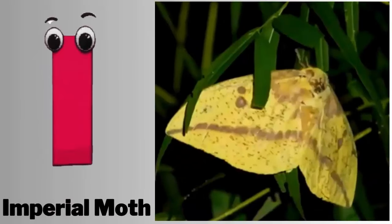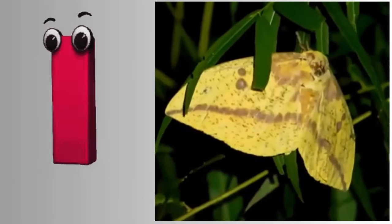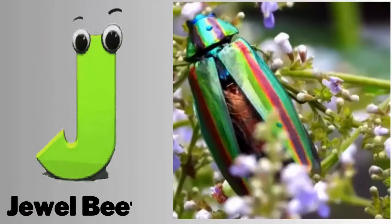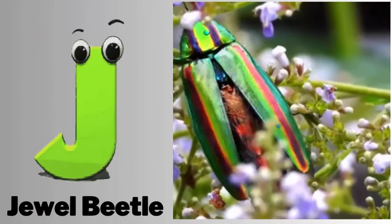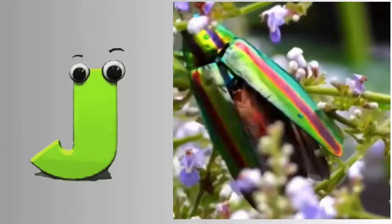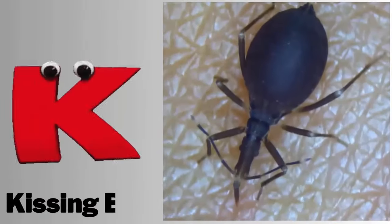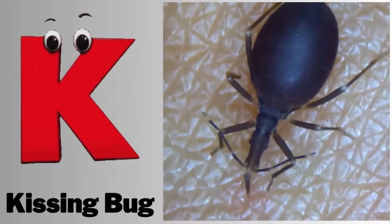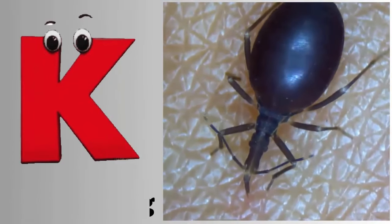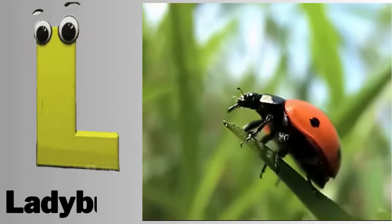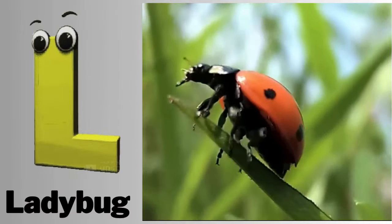I. I for imperial moth. J. J for jewel beetle. K. K for kissing bug. L. L for ladybug.